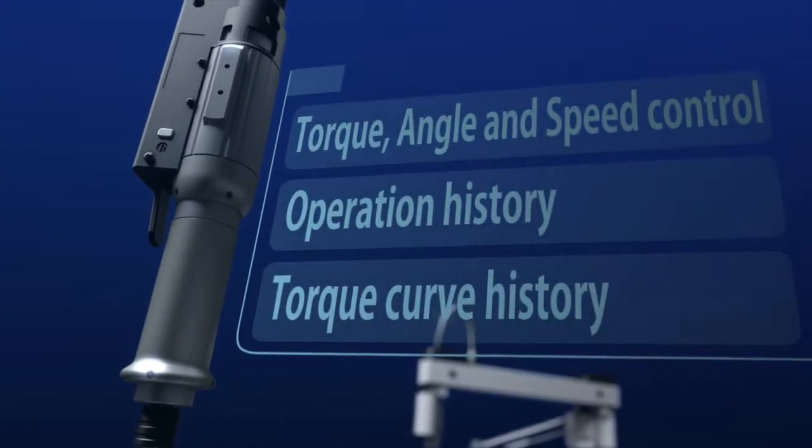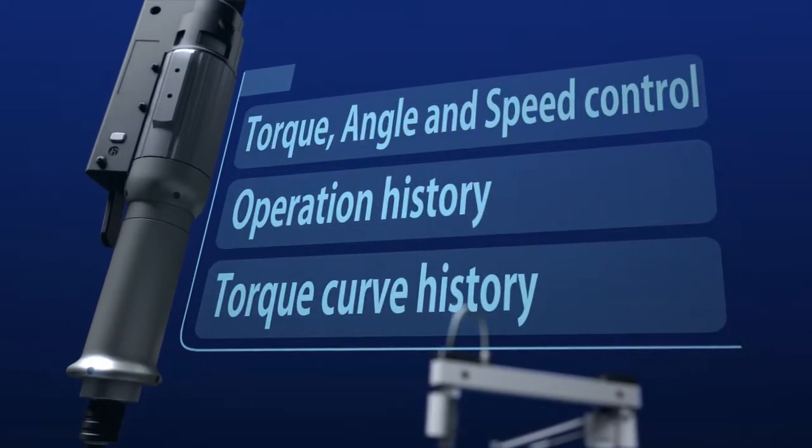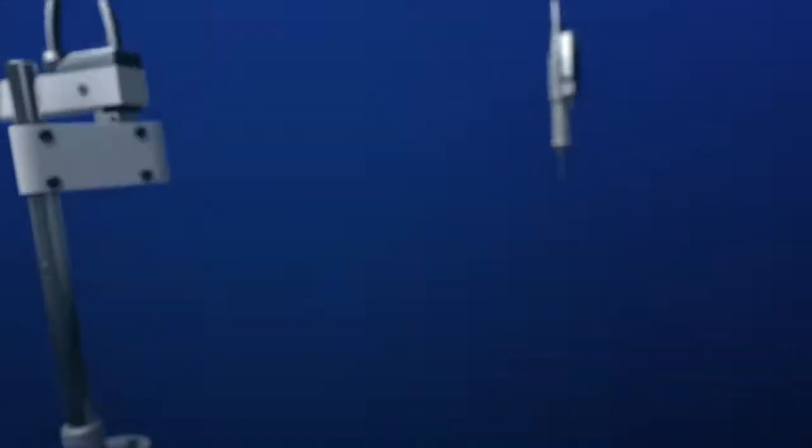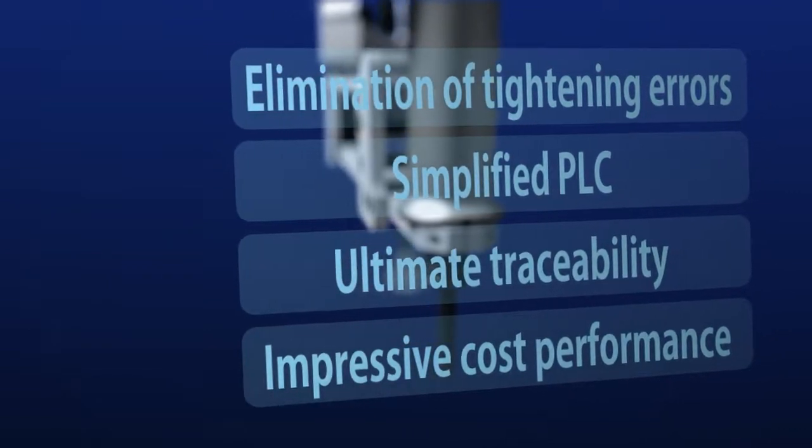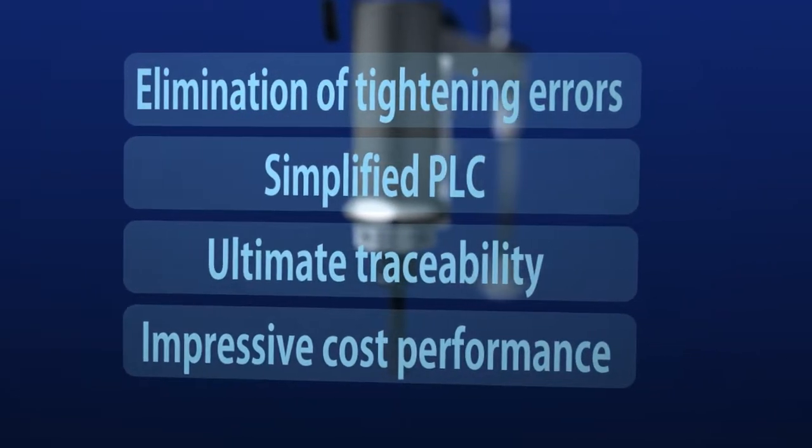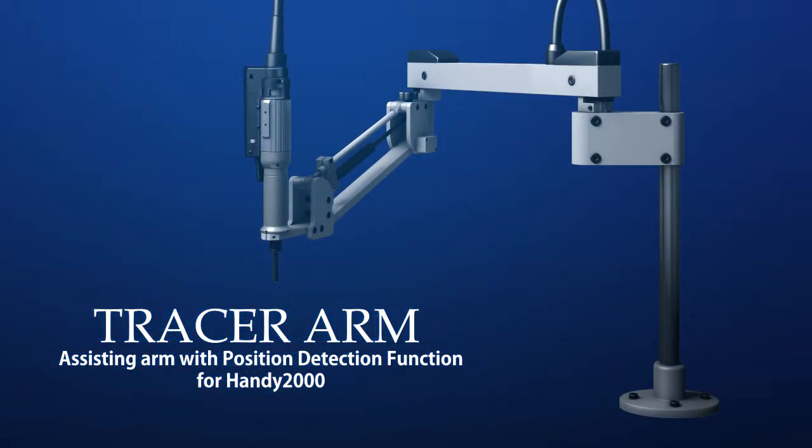The Tracer Arm adds three-dimensional positioning data to the Handy2000's control of torque, angle and tightening speed. The Tracer Arm, with its revolutionary position detection function, takes accuracy and reliability in manufacturing to new heights, providing the ultimate in traceability and impressive cost performance.